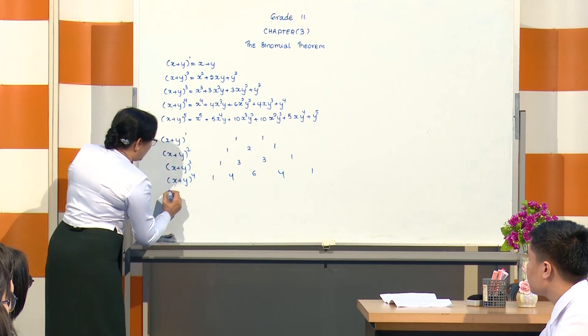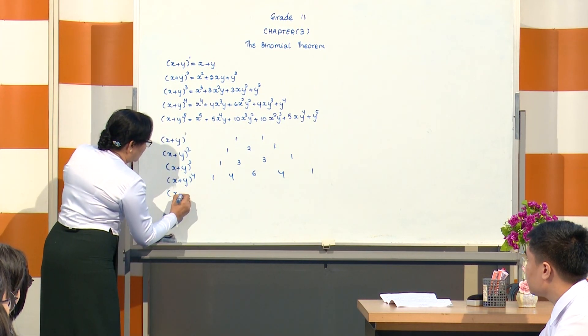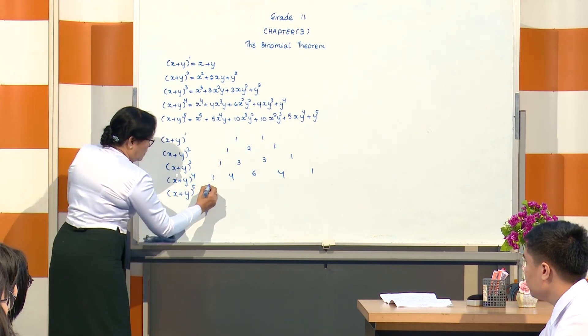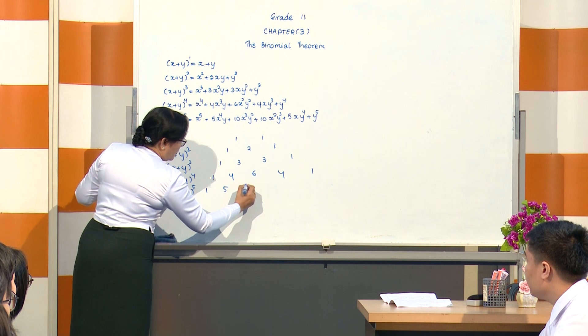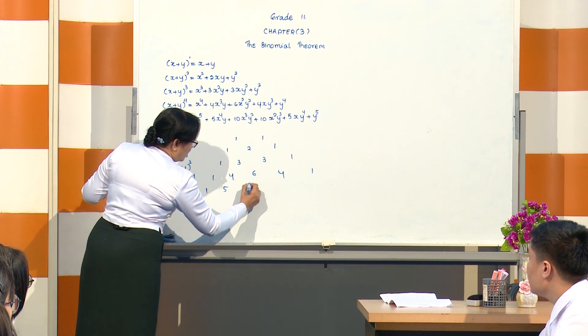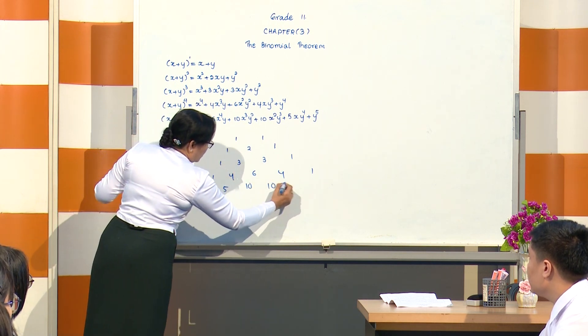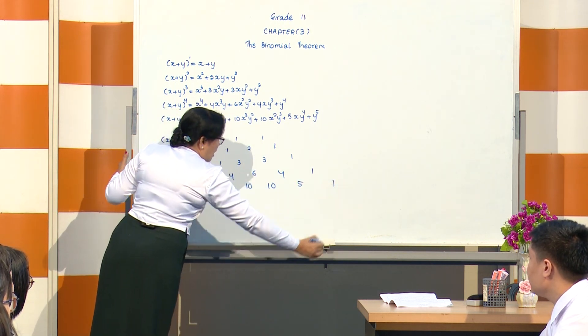For (x+y) to the power five, the coefficients are 1, 5, 10, 10, 5, 1.